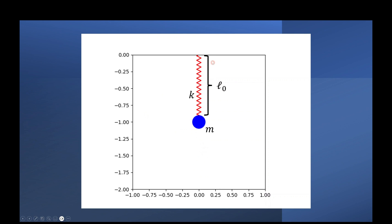The elastic pendulum is simply a spring-mass system which is allowed to pivot at the origin, highlighted by the cursor. The spring has a spring constant k, the mass is m, and the length of the spring when it's not stretched is l0. This would be the length of the spring with no forces acting on it, such as gravity — so if we put it on a table and measured it, that would be l0.